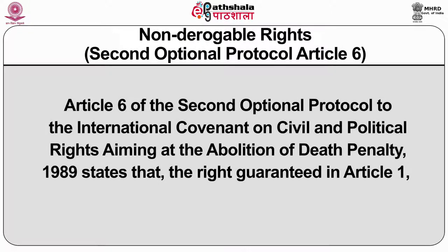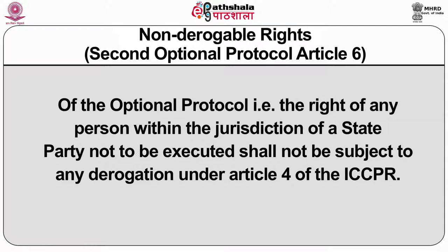Non-derogable rights: Second Optional Protocol, Article 6. Article 6 of the Second Optional Protocol to the International Covenant on Civil and Political Rights, aiming at the abolition of the death penalty (1989), states that the right guaranteed in Article 1 of the Optional Protocol — that is, the right of any person within the jurisdiction of a state party not to be executed — shall not be subject to any derogation under Article 4 of the ICCPR.